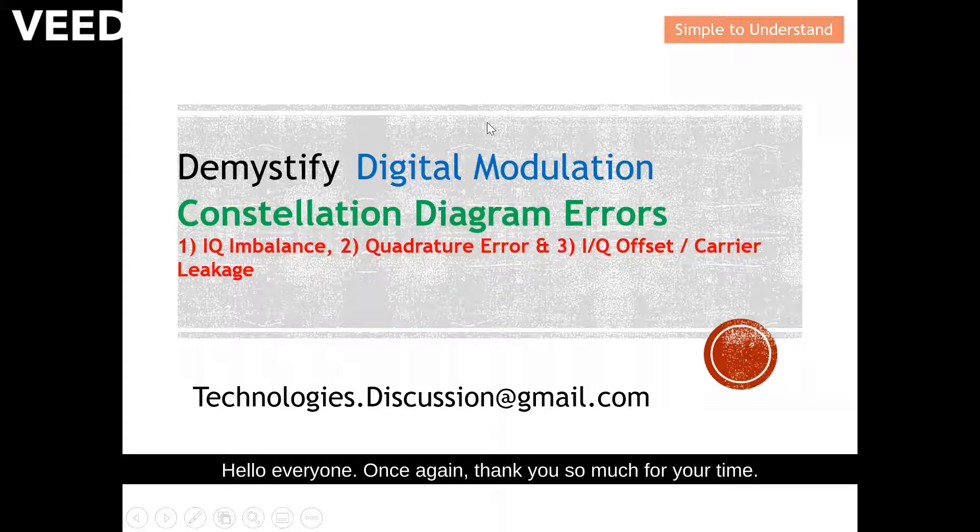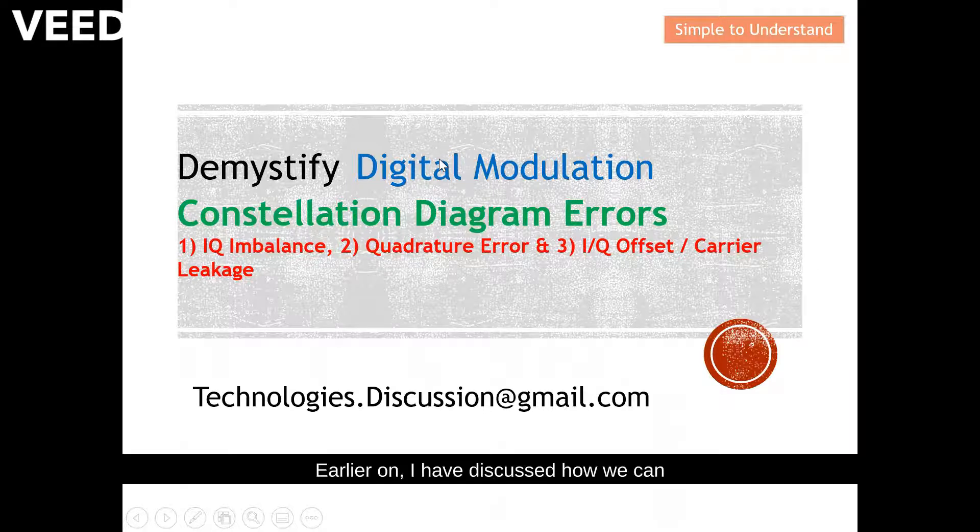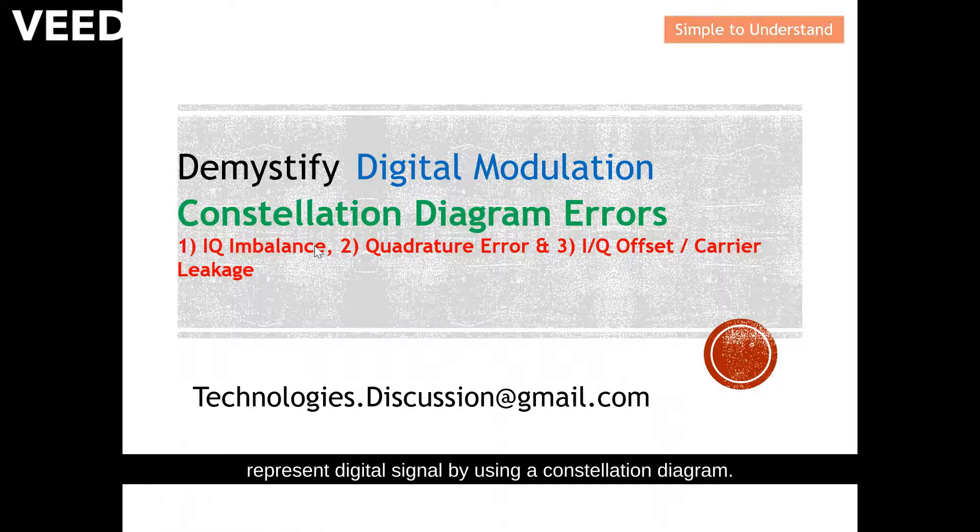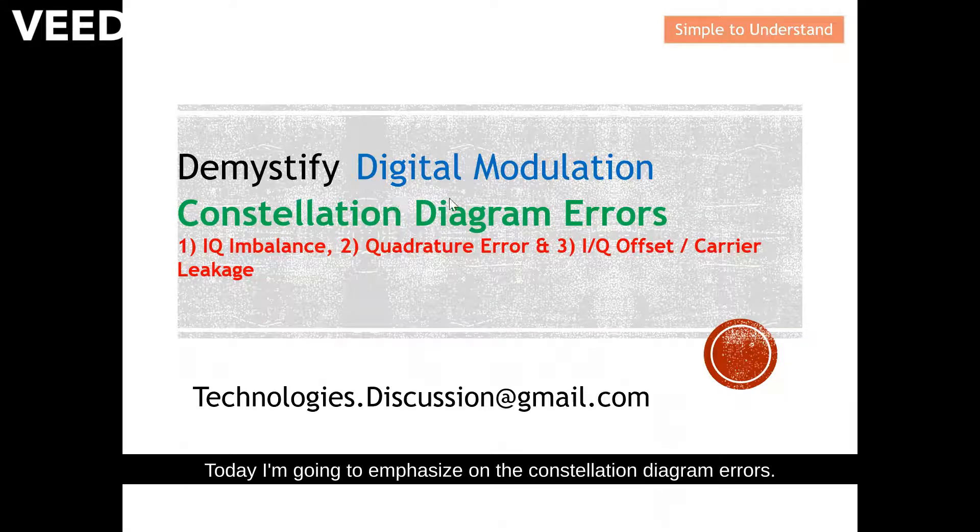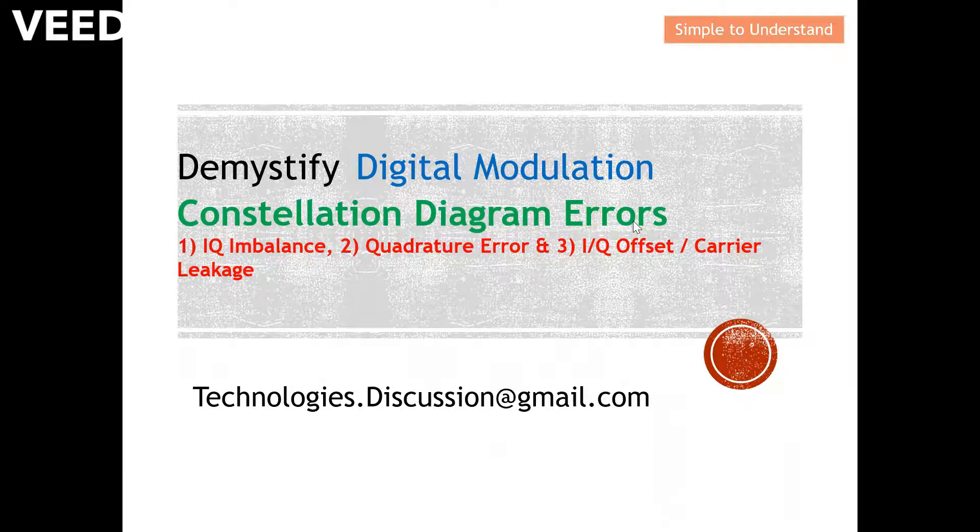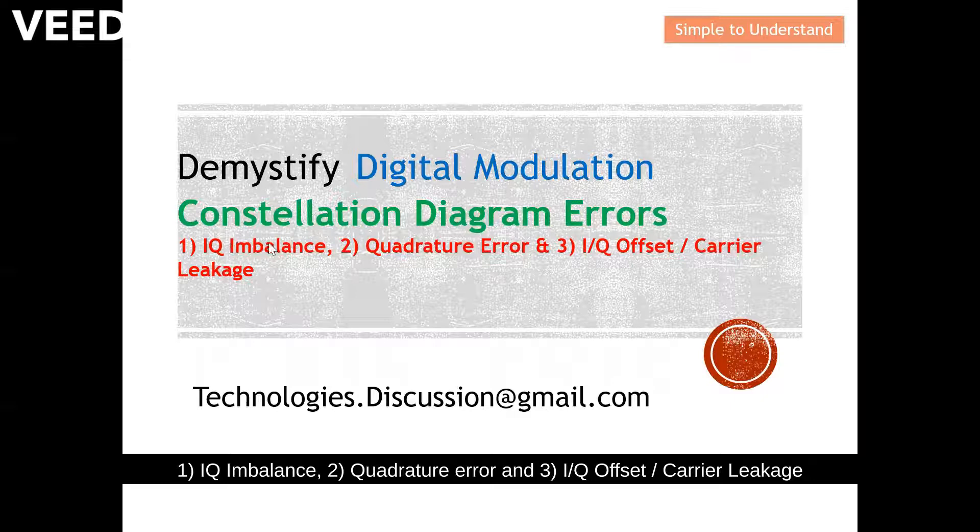Hello everyone, once again thank you so much for your time. Today I'd like to focus on digital modulation. Earlier on I have discussed how we can represent digital signal by using a constellation diagram. Today I'm going to emphasize on the constellation diagram error. In general, there are three types of error for constellation diagram: number one is called IQ imbalance, number two quadrature error, number three is called IQ offset or carrier leakage.